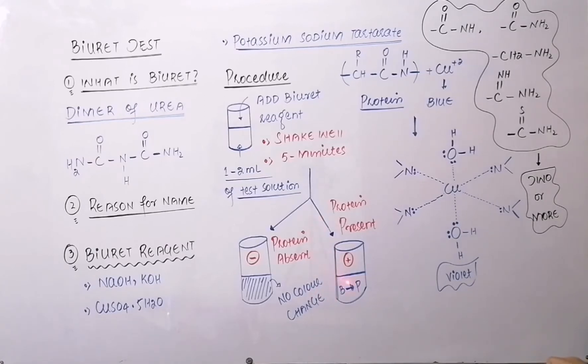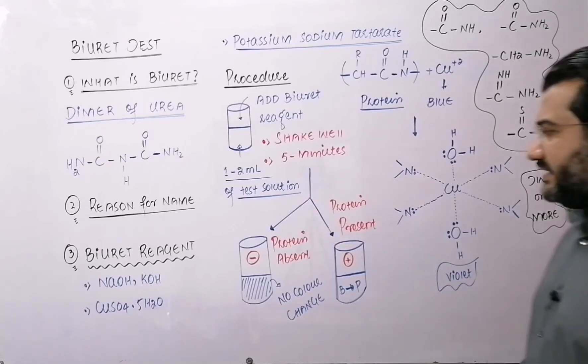But if the color in this reaction mixture has changed from blue to purple or violet, it means it is the indication of the positive biuret test and the result will be that protein is present.